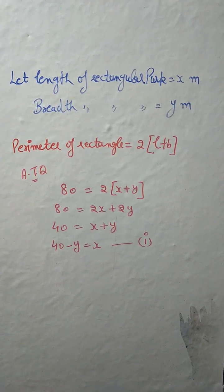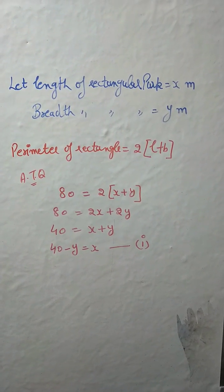We will take 2 common. Now it becomes 40 = x + y, or 40 - y = x. Now we have the value of x; this is our equation number 1.